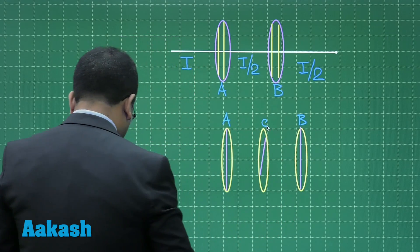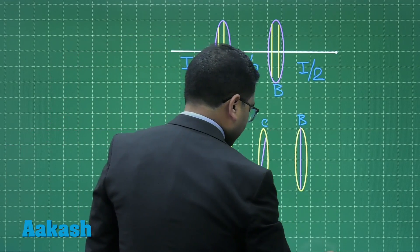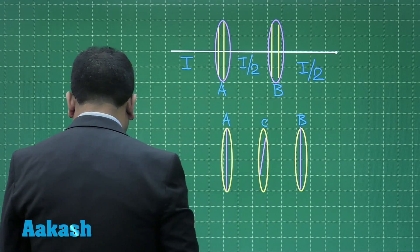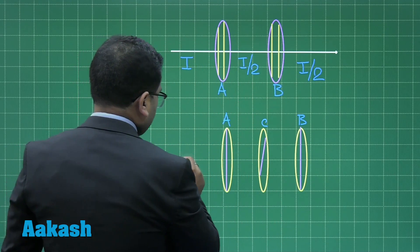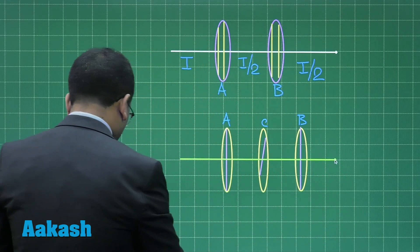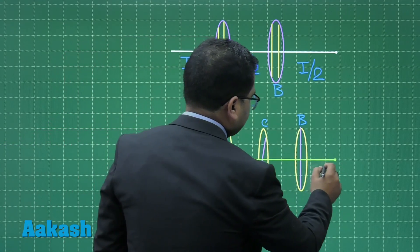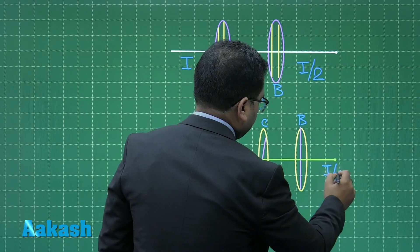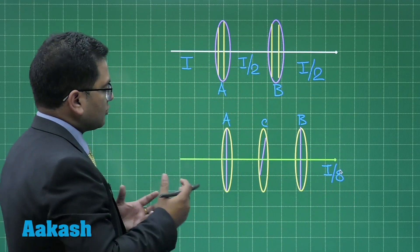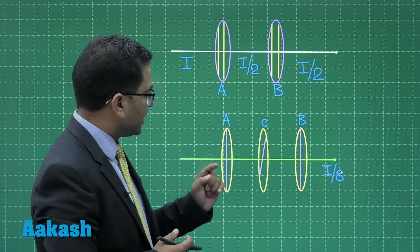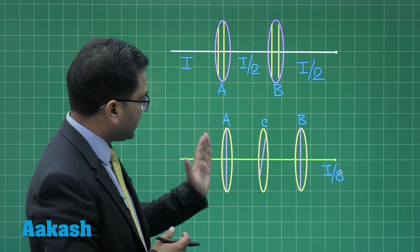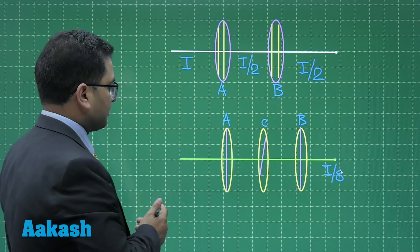Let me say it is inclined. This is A, this is B, this is C. Eventually what is happening is whenever light passes and comes out, the intensity here is I by 8. Now let's try to see. Let me say the angle between the polarizing axis of A and C be theta.